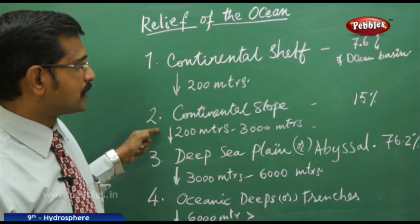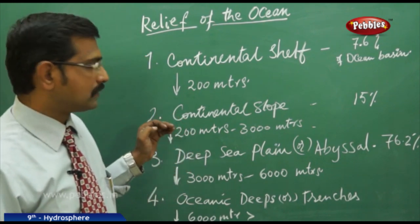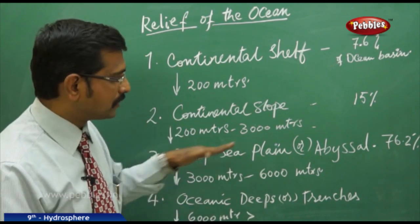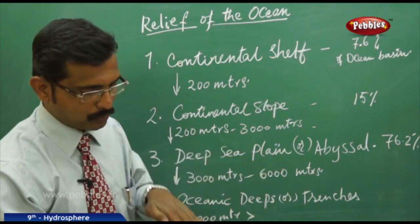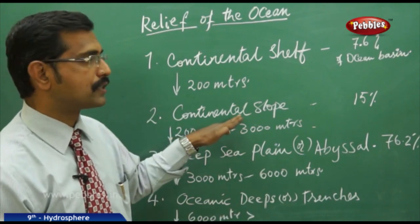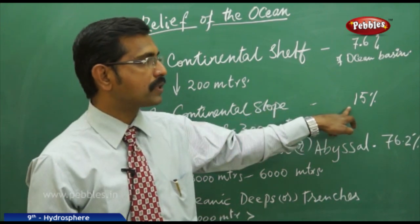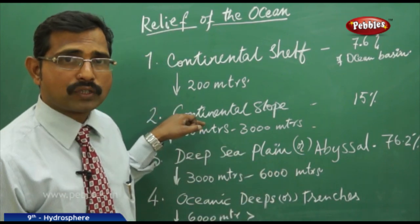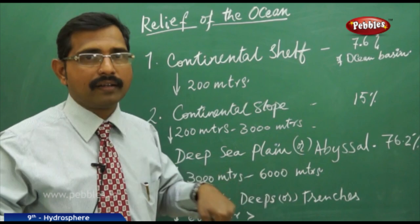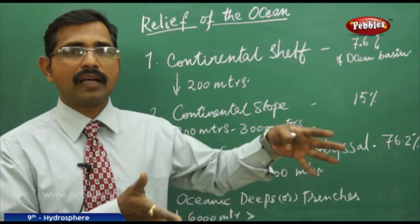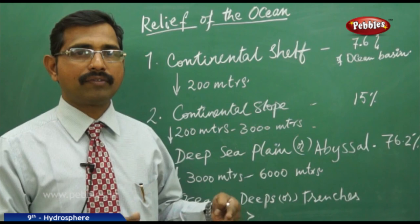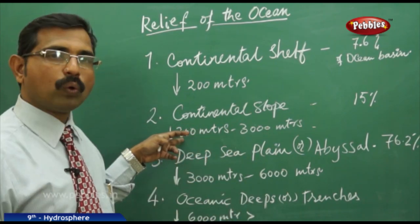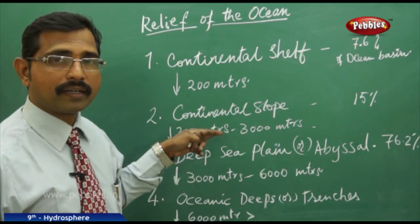The second part is the continental slope, extending from 200 meters depth to 3000 meters deep — that is up to three kilometers. It forms 15% of the ocean basin. The continental slope indicates the continental margins; for example, the boundaries of Africa are calculated based on the continental slopes.